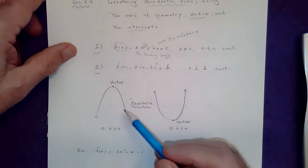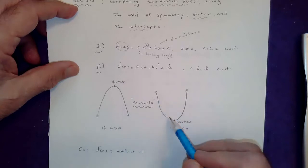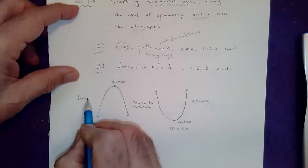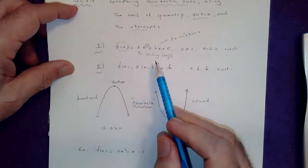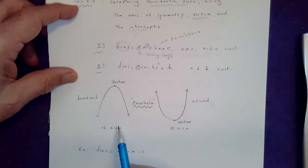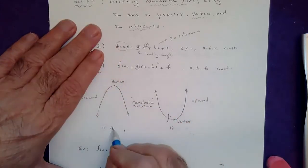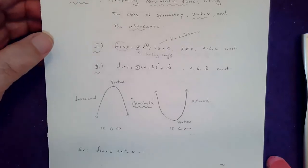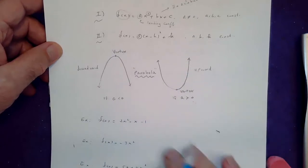In either case, the graph is called a parabola. Whether the parabola opens downwards or upwards depends on the sign of the leading coefficient in both forms. If a is negative, the parabola opens downwards. If a is positive, the parabola opens upwards.